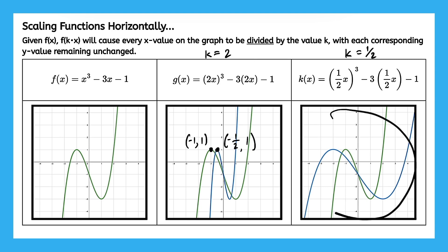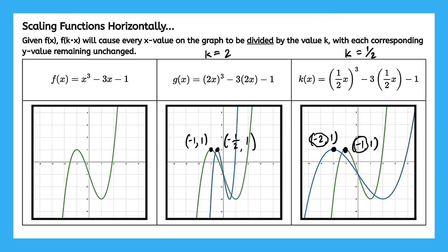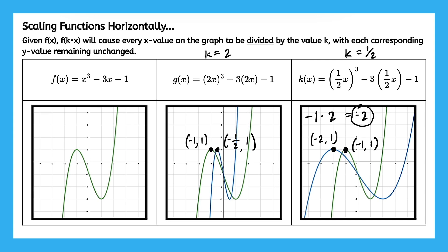Now let's see what happens in k of x. The two corresponding points: the y value was 1 and 1 — it did not change, just as we learned. But the x value went from negative 1 to negative 2. So we did negative 1 divided by k, or divided by 1 half, to get negative 2. Another way to write negative 1 divided by 1 half is negative 1 times 2 — same thing — which gives us negative 2 for our new x value. So when we scale functions horizontally, we divide the original x value by k to get the new x value.